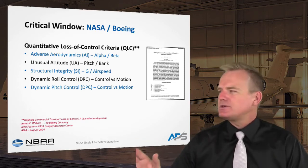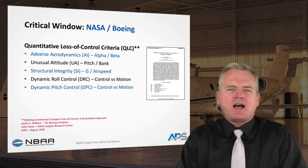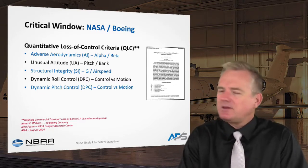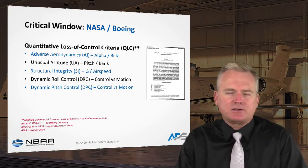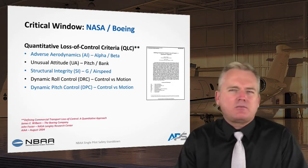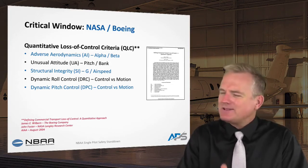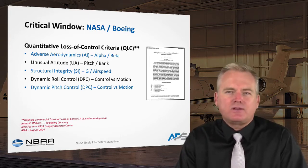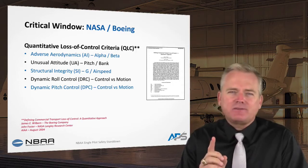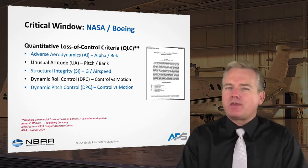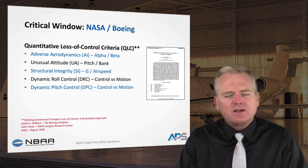The most important point of this research is that they determined the amount of time it takes for an airplane to go from the first criterion being met — say a pitch of 25 degrees nose up — to the point where three were occurring simultaneously. Three elements occurring simultaneously indicated the pilot was no longer in control. Based on loss-of-control commercial aviation accidents, the average time from the first to the third criterion was anywhere between two and twelve seconds.